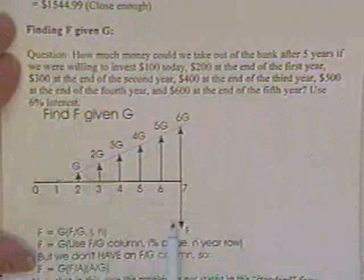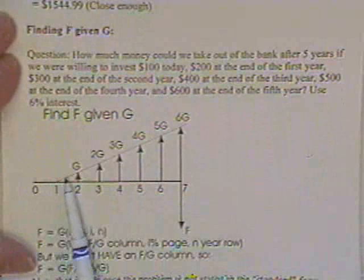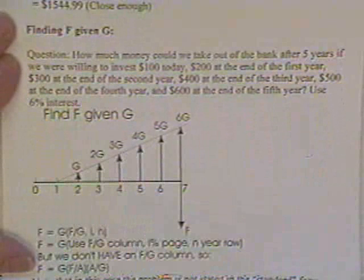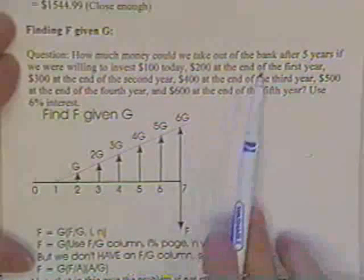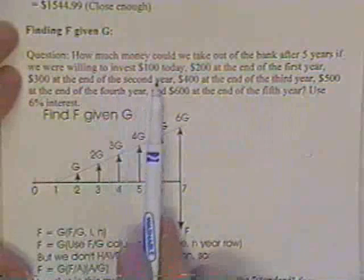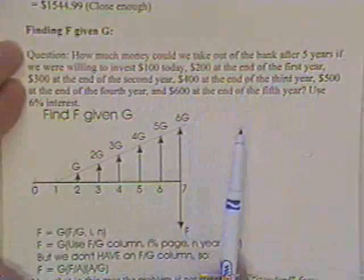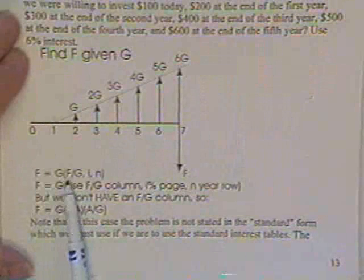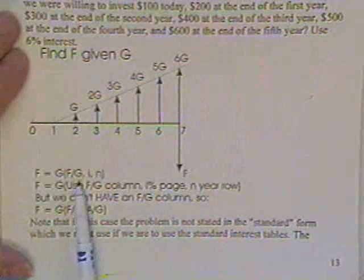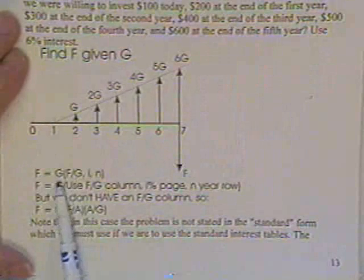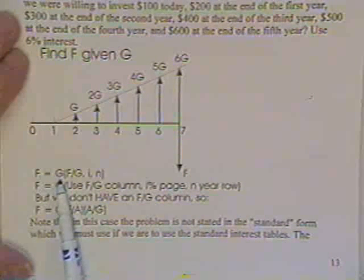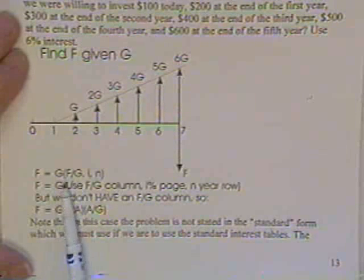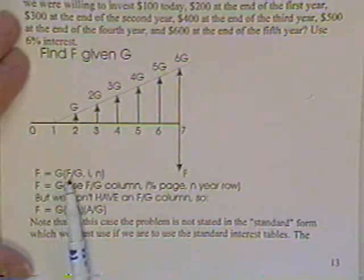All right. Finding the future value if you are able to cough up out of your earnings a steadily increasing stream of deposits. How much money could we take out of the bank after 5 years if we're willing to invest $100 today, $200 at the end of the first year, and so on? The answer would be found by using this factor out of the table. You're given the G, so that goes on the right-hand side of the equation. You want the F to get that, you'd multiply times F over G. G would cancel G, leaving F.